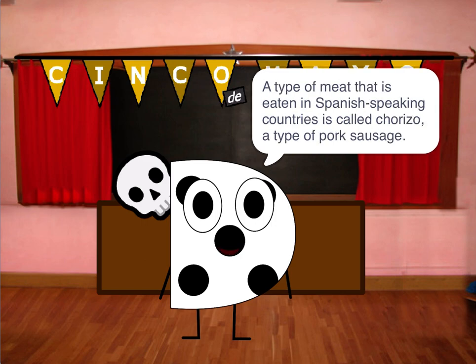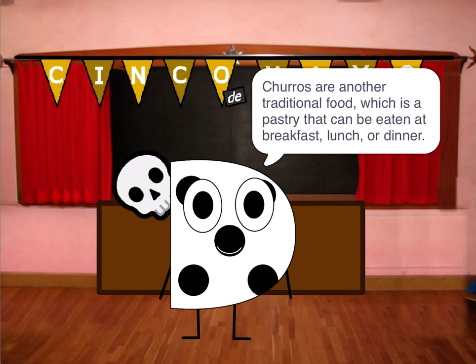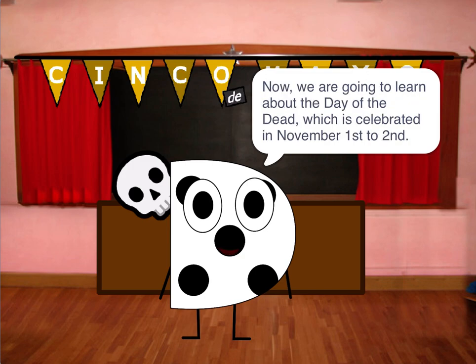A type of meat that is eaten in Spanish-speaking countries is called chorizo, a type of pork sausage. Churros are another traditional food, which is a pastry that can be eaten at breakfast, lunch, or dinner.